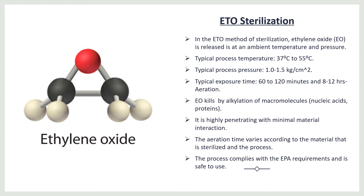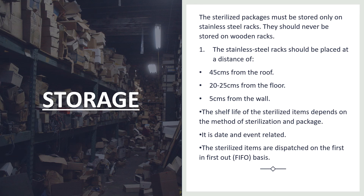ETO — ethylene oxide — is released at ambient temperature and pressure. The typical process temperature is 37 to 55 degrees Celsius, typical process pressure is 1 to 1.5 kg per centimeter square, and exposure time is typically 6 to 120 minutes. ETO kills microorganisms by alkylation of micromolecules. It is highly penetrating with minimal material interaction. The aeration time varies according to the material being sterilized, and the process must comply with EPA requirements.